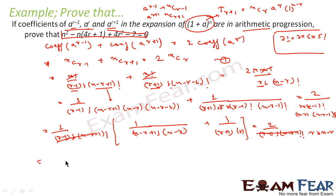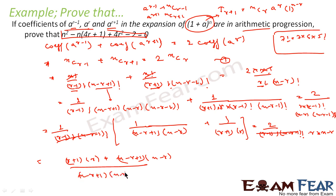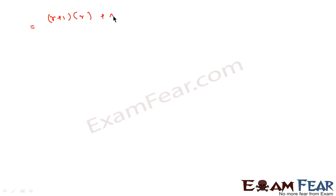After cancelling the common factors, we get: the expression on the left becomes (n minus r plus 1) times (n minus r) divided by 1, plus 1 divided by (r plus 1) times r; and the right-hand side becomes 2 divided by r times (n minus r). We can then cancel the r and (n minus r) factors common to both sides.